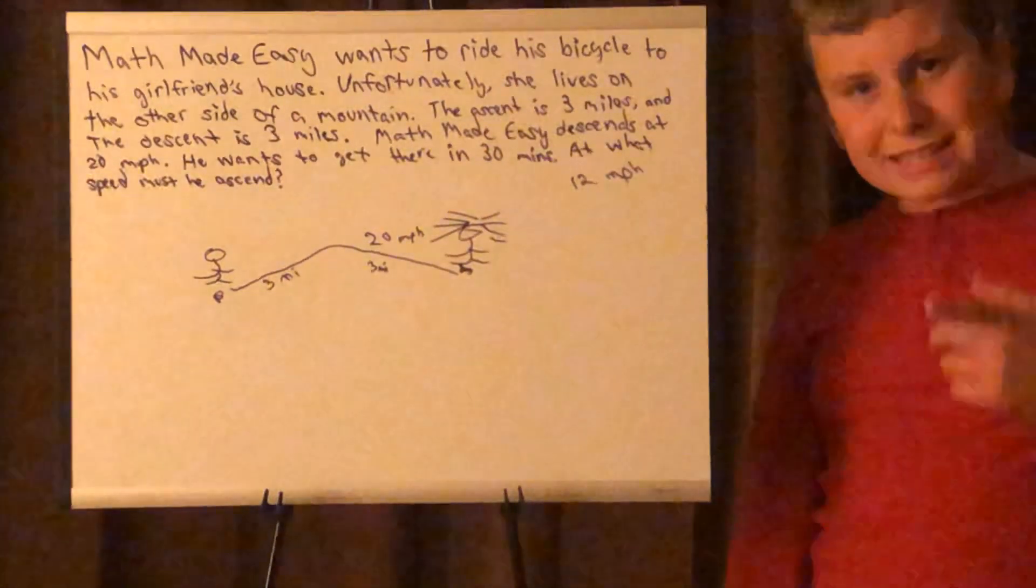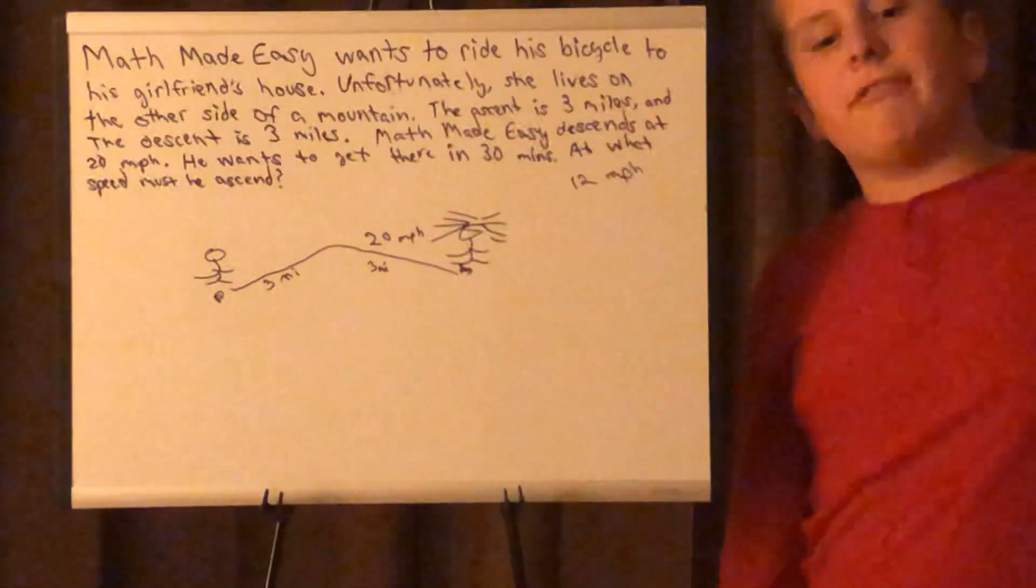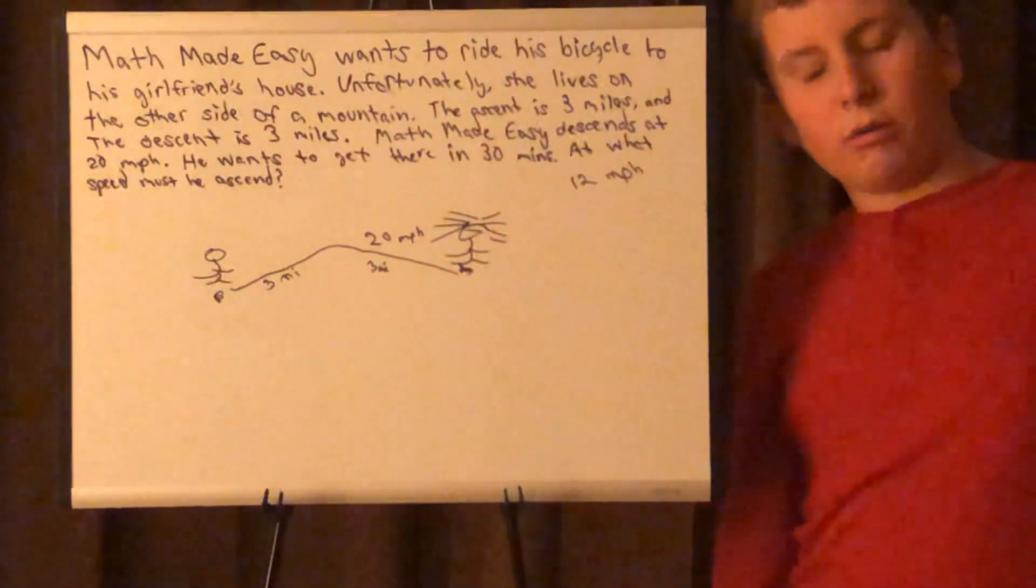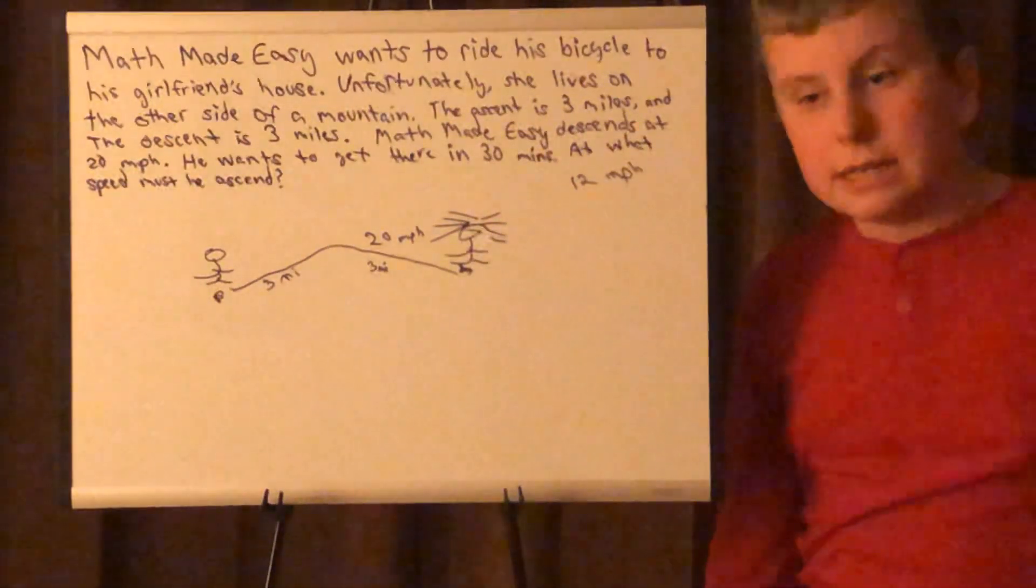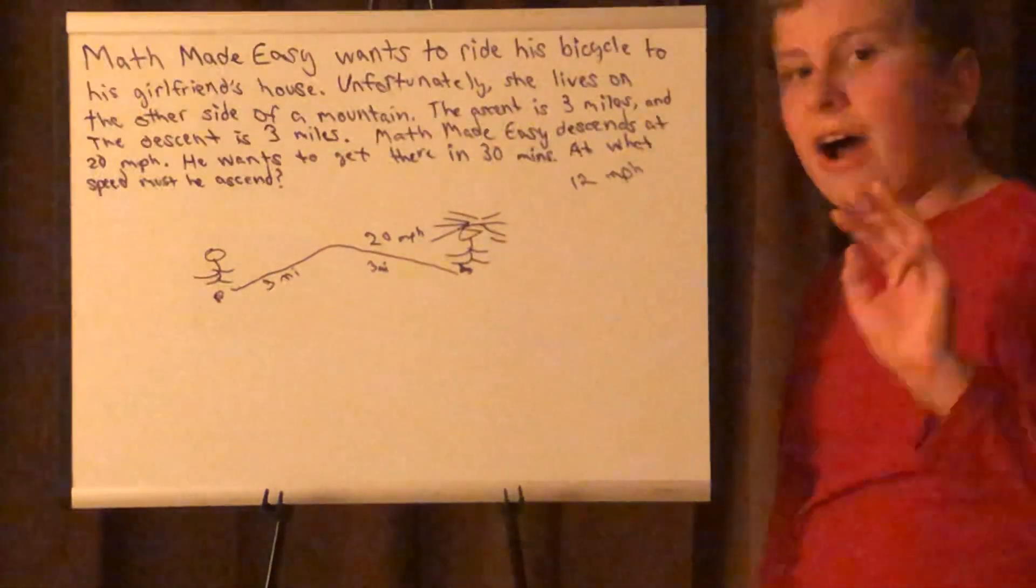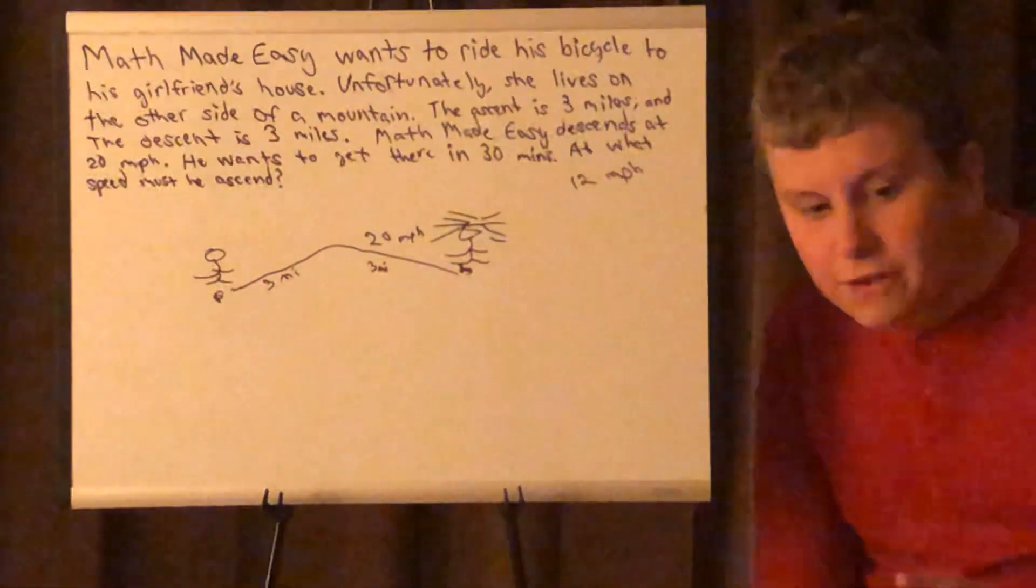Why do we take the geometric mean? Because think about it. If I'm going to ride 12 miles per hour, that's going to be a five-minute mile. If I'm going to ride 15 miles per hour, that's going to be a four-minute mile.